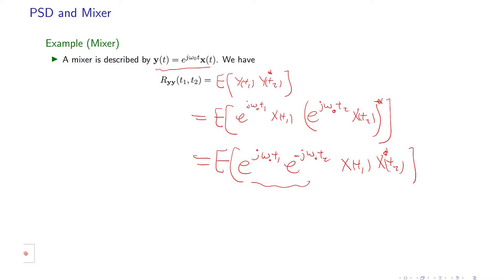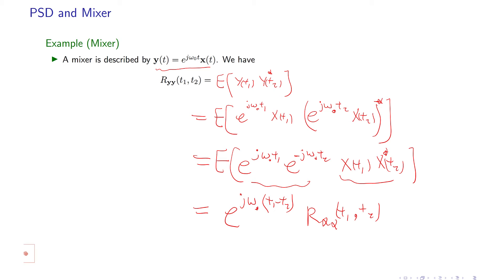These two exponential terms simplify: since they are not random, they come out of the expectation operation, becoming e to the power of j omega naught times (t1 minus t2). What remains inside the expectation is the mean of x of t1 times the conjugate of x of t2, which is R_xx(t1, t2). Now, if the random process x of t is wide-sense stationary, this is only a function of the time difference, so it equals R_xx(τ), where τ is defined as t2 minus t1.